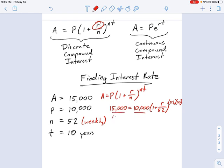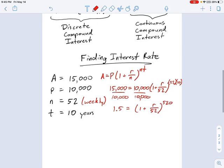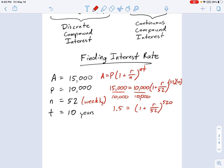The very first thing that I'm looking at is this $10,000. If I can get that off of there, that'll be a good start. So I'm going to divide each side by $10,000, and what you get is 1.5 equals (1 + r/52) to the—looks like 520. That's a big exponent.